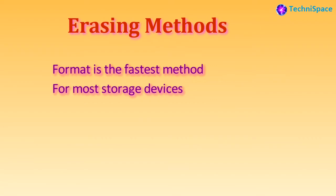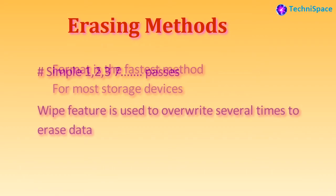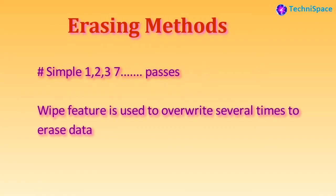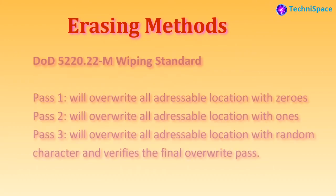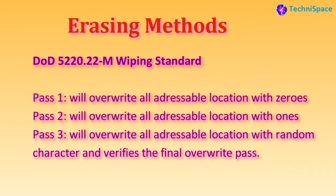Format is the fastest option and most commonly used — it removes references to the file on the drive without overwriting those portions. Simple wipe options of one, two, three, or seven passes will overwrite the drive with different algorithms, making it much more difficult to retrieve the data. The wipe feature is used to overwrite and erase data from the hard drive.